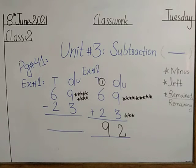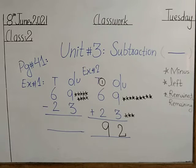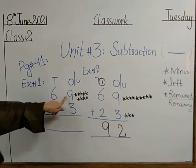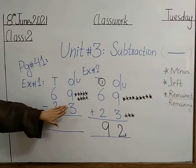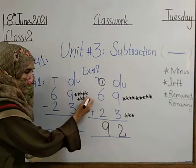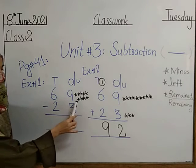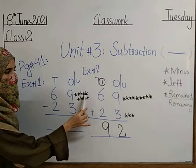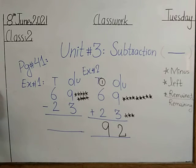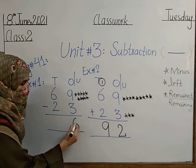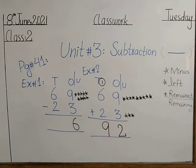Now we have to subtract our numbers. Nine minus three: cut these three stars from nine. Now we have six remaining stars. So we will write 6 in the ones place value.